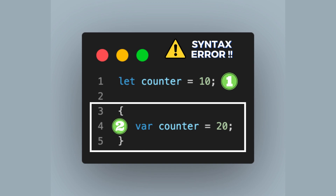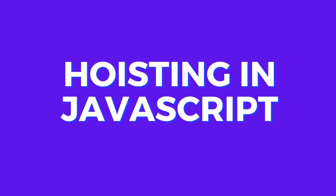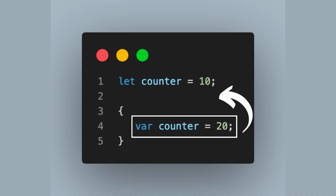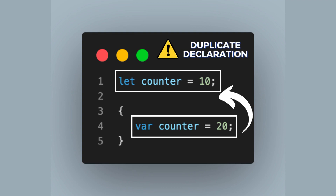Let me explain. There is a good reason why JavaScript behaves this particular way. The var keyword triggers something known as hoisting in JavaScript. While hoisting as a topic demands its own video, the simple point is that the var keyword will result in the counter variable being hoisted to the top of the program, essentially making it a global variable. Since there is already a declaration for the counter variable using the let keyword, hoisting because of the var results in a duplicate declaration of the same variable — hence the error.